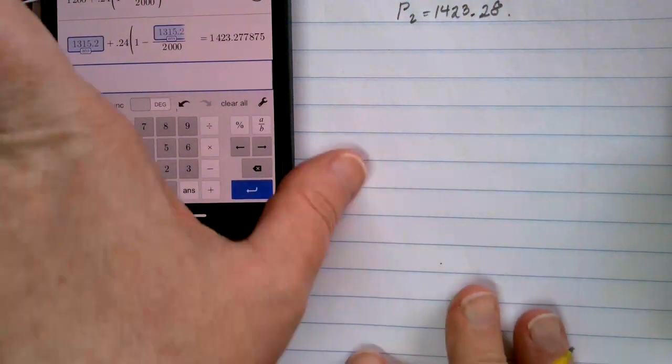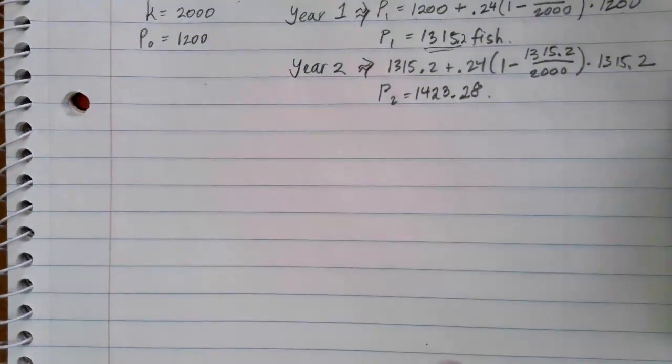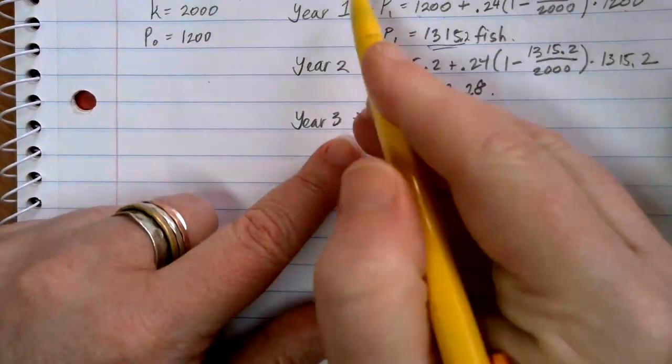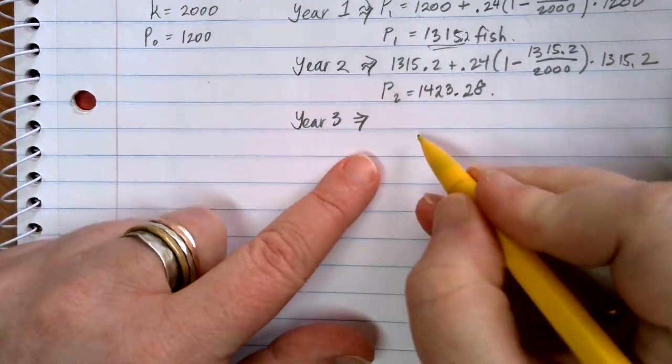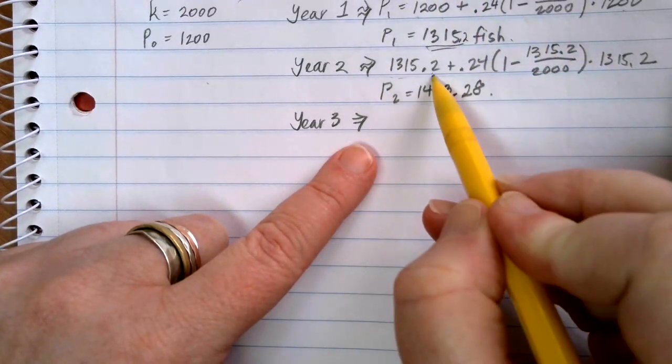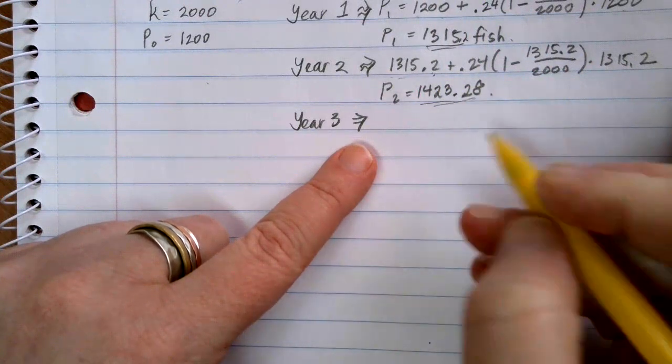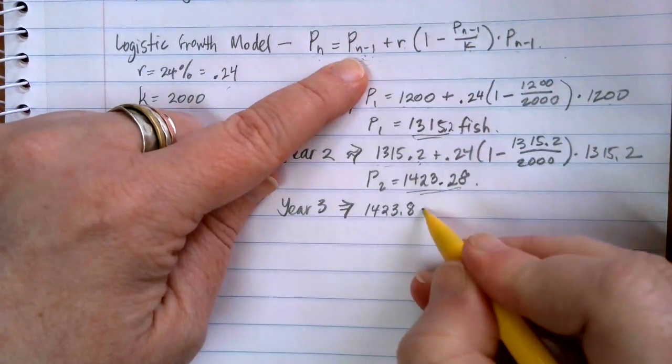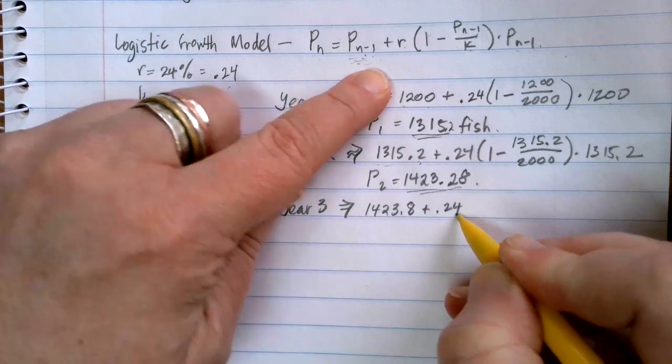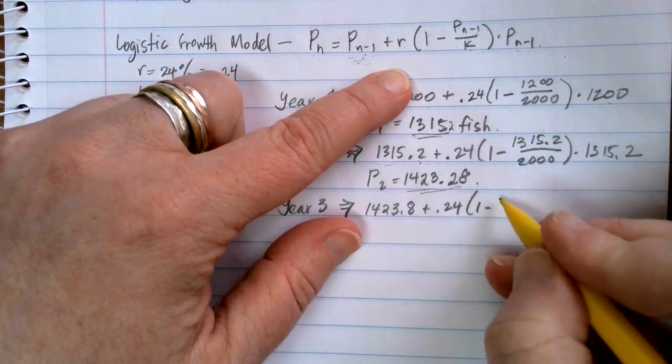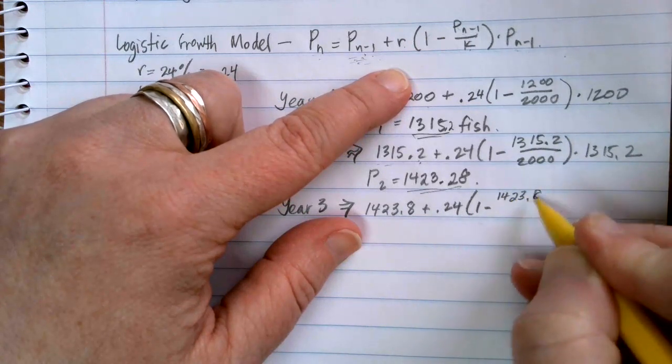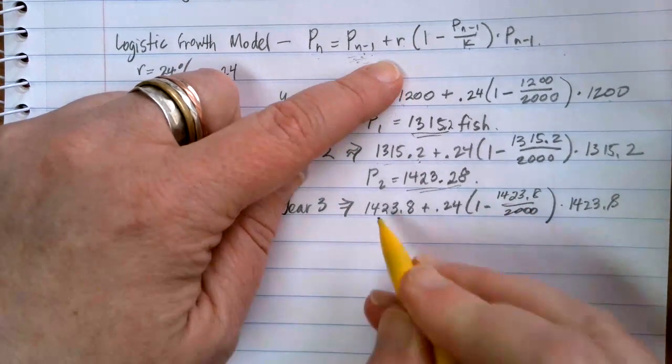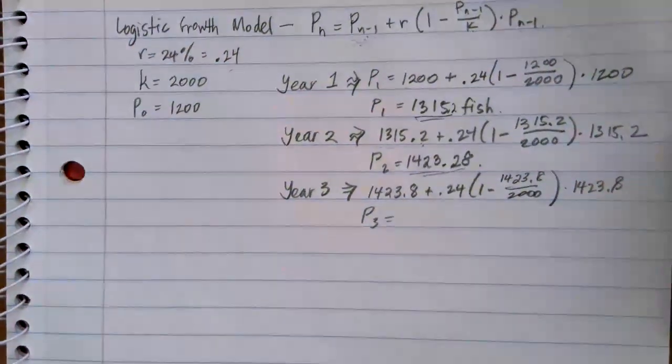Now that I know year two's population, I can now put in year three's population, or I can find year three's population. As I go through here for year three, every time that I see the 1315.2 from the last equation, I'm now going to use the 1423.8. So 1423.8, the previous years, plus the rate is still 0.24, times one minus the 1423.8 over the 2,000. Times by 1423.8 again, and that's going to get me my fish population in year three.